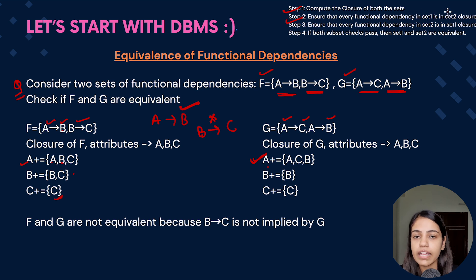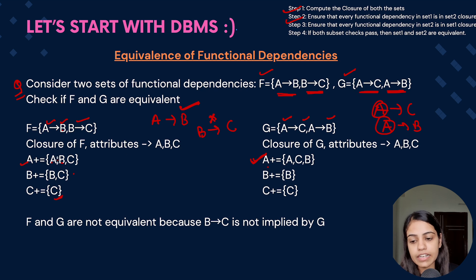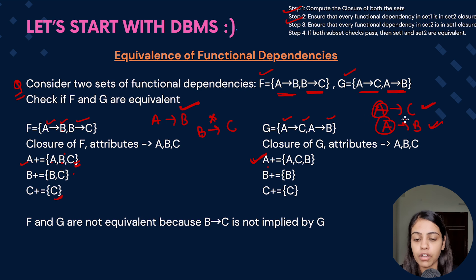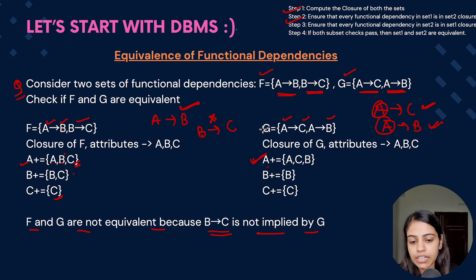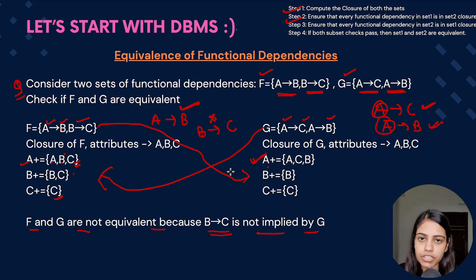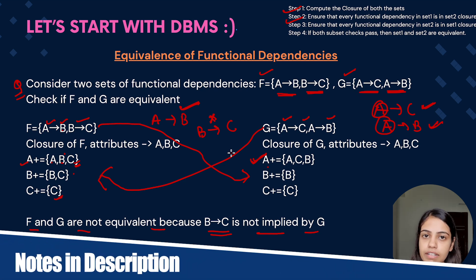Since B→C is not implied by G, every FD in F is not present in G's closure. Now checking the reverse: G's FDs are A→C and A→B. For A→C: check A+ in F — A+ = {A, B, C}, which contains C, so this holds. For A→B: A+ in F also contains B, so this holds. But since B→C was not covered by G, we conclude that F and G are not equivalent, because B→C is not implied or covered by G. To summarize: find the closures, then cross-check — FDs in G are checked against F's closure, and FDs in F are checked against G's closure.